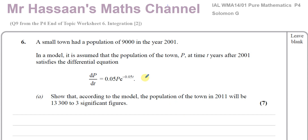A small town had a population of 9,000 in the year 2001. In a model, it is assumed that the population of the town at time t years after 2001 satisfies this differential equation: dp/dt equals 0.05 times P, e to the power of negative 0.05 times t. Show that according to the model, the population of the town in 2011 will be 13,300 to 3 significant figures. So we have to solve this differential equation and find the population value from 2001 to 2011, that's after 10 years.